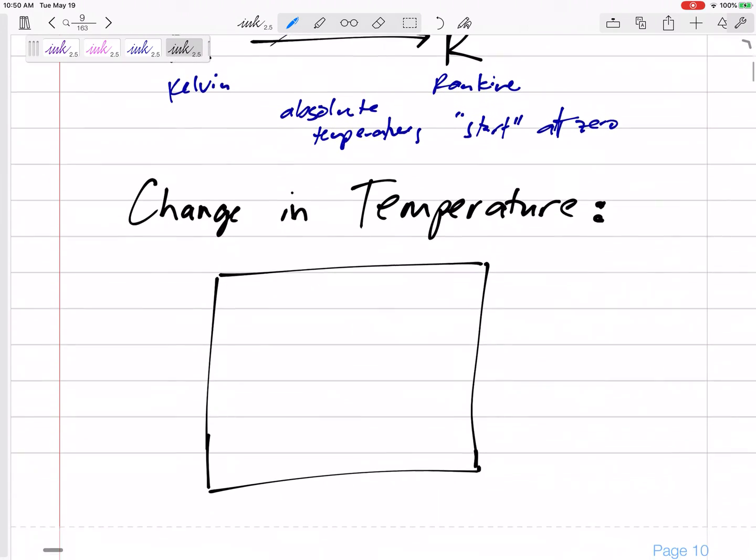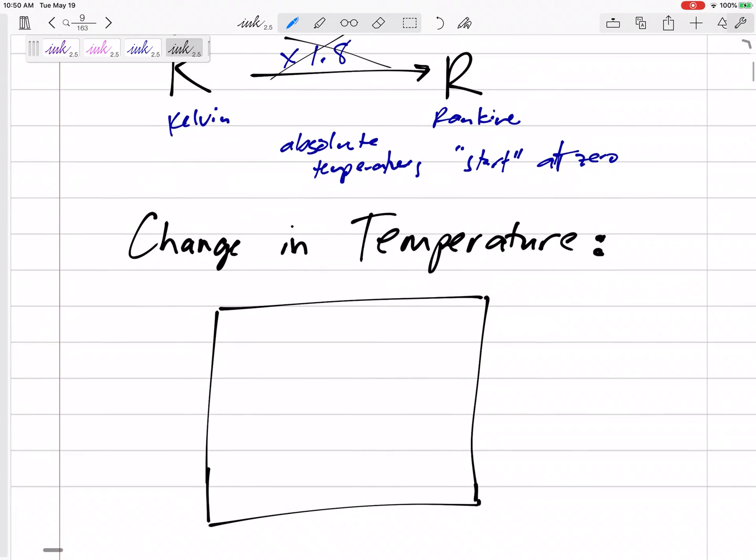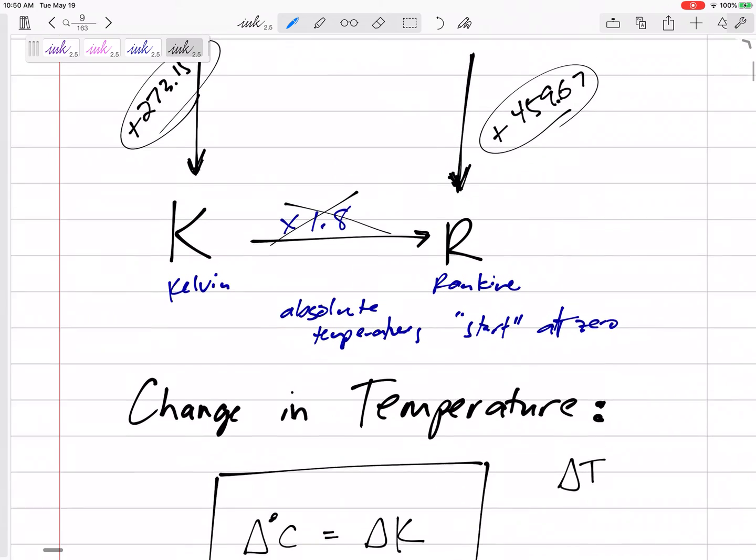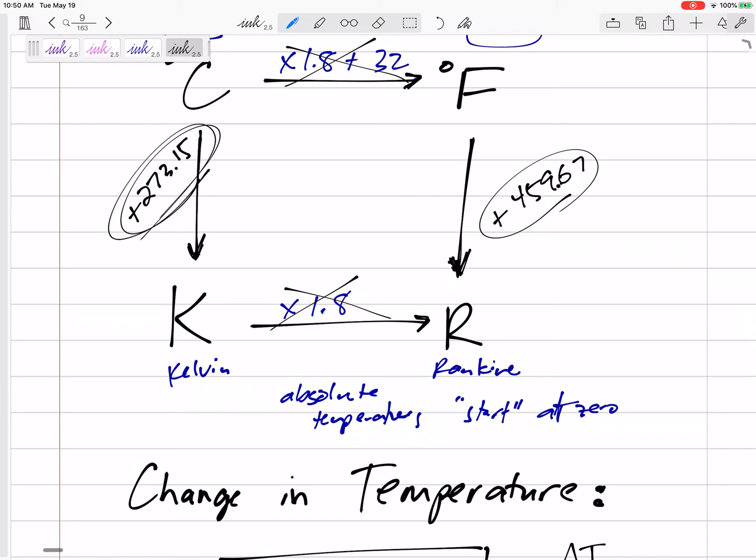But if our equation calls for a delta T, if our equation calls for a change in temperature, you know the change in temperature in Celsius there is no conversion to the change in temperature in Kelvin, right? Because they're just offset by 273. So if Celsius rises 10 degrees, Kelvin also has risen 10 degrees.